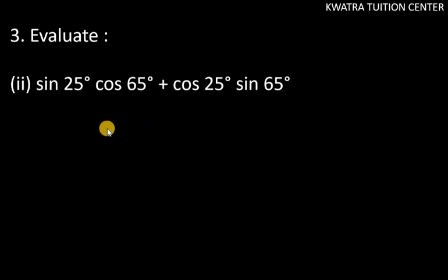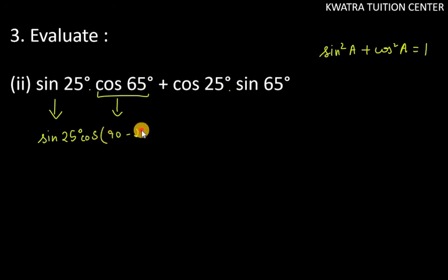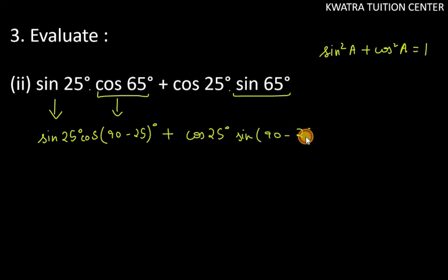The second part is: sin 25 degree times cos 65 degree plus cos 25 degree times sin 65 degree. We will replace cos 65 with cos(90 minus 25), because 90 minus 25 is 65. And we replace sin 65 with sin(90 minus 25). The first term sin 25 degree stays as it is, and cos 25 degree stays as it is.